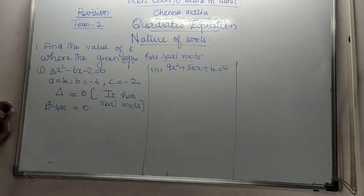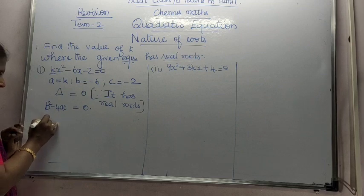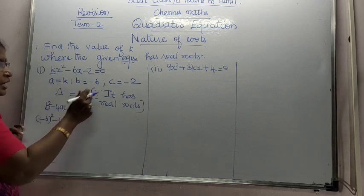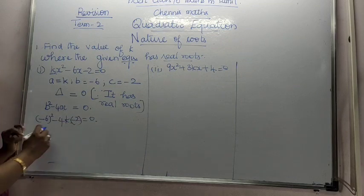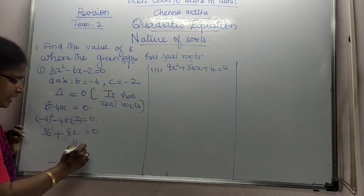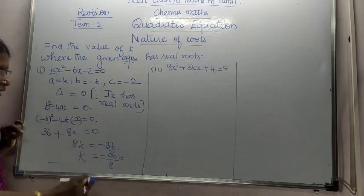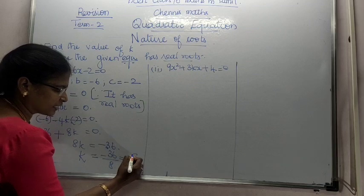b squared minus 4ac. Minus 6 the whole squared minus 4 into a into c is equal to 0. That is nothing but multiply. Therefore 6 sixes are 36. Minus into minus plus, 4 twos are 8k is equal to 0. We have 8k is equal to minus 36. Therefore k is equal to minus 36 by 8.